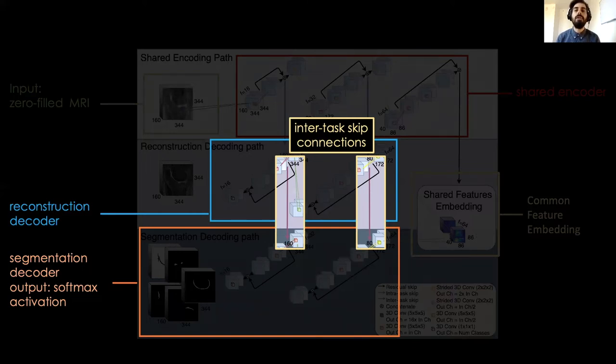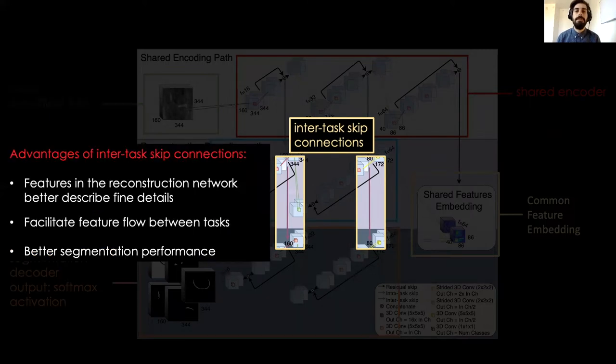This is a novel contribution of our architecture. We experimentally observed that the use of inter-task connections results in better segmentation performance. This is because the features available along the reconstruction leg of the network are representative of finer details, which are formulated during the MRI reconstruction.